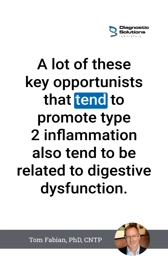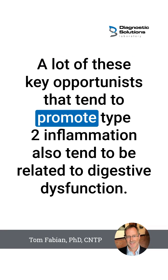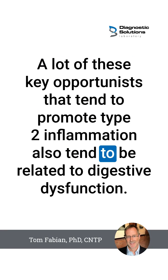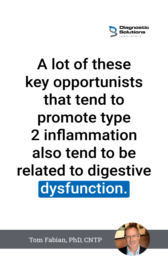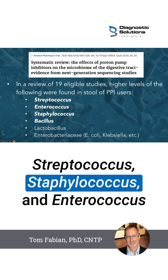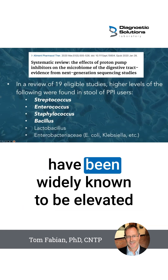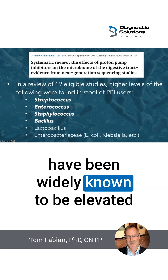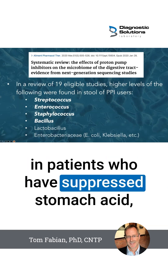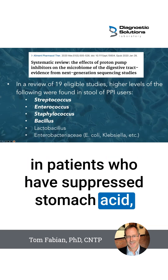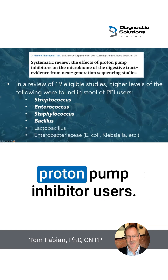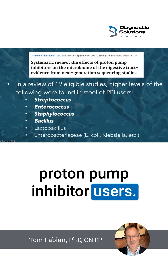A lot of these key opportunists that tend to promote type 2 inflammation also tend to be related to digestive dysfunction. Streptococcus, staphylococcus, and enterococcus have been widely known to be elevated in patients who have suppressed stomach acid, particularly in the case of PPI — proton pump inhibitor — users.